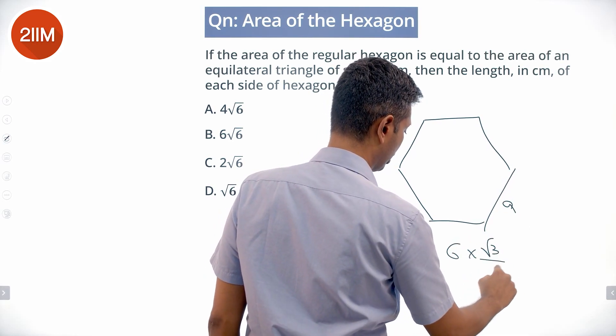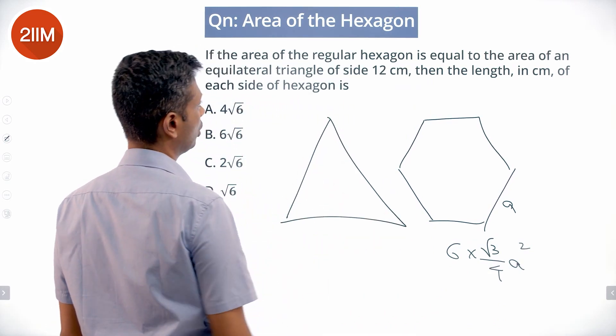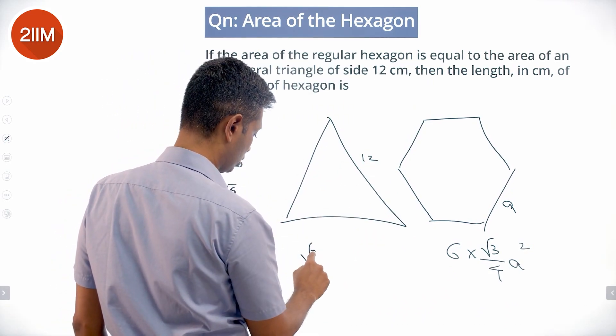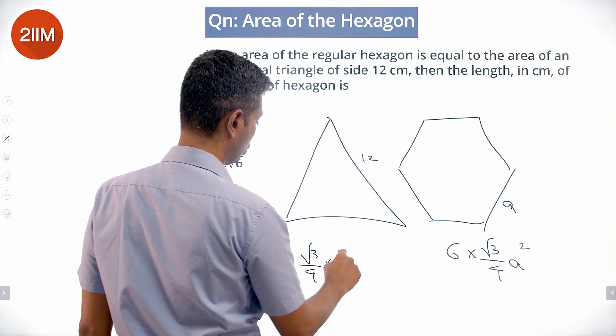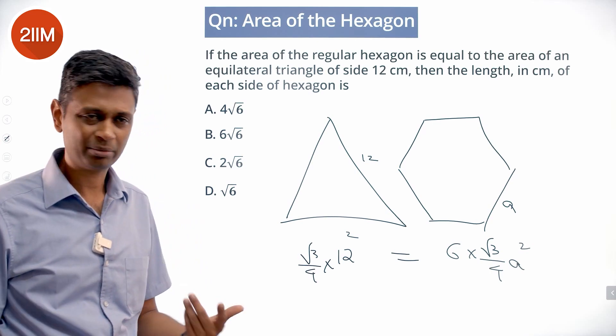6 times root 3 by 4 a squared, which equals the area of an equilateral triangle of side 12, equal to root 3 by 4 times 12 squared. Equating these,